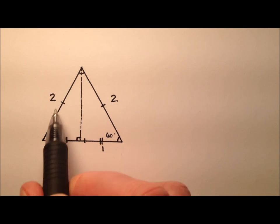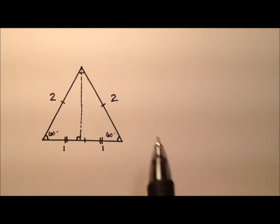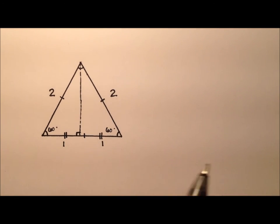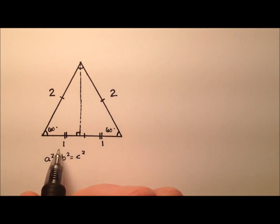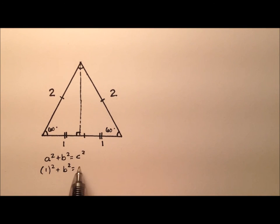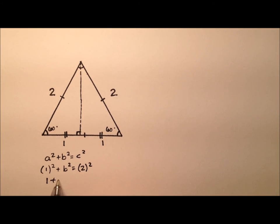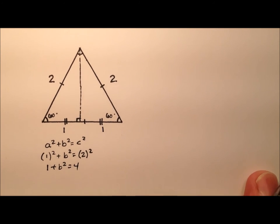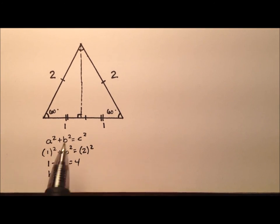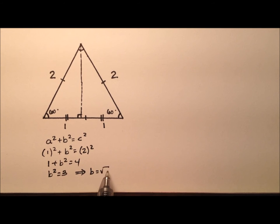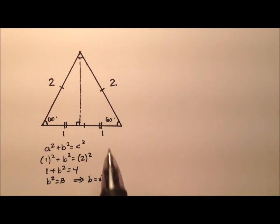Since this is a right triangle, I can use the Pythagorean theorem to find the height. So a squared plus b squared equals c squared — one squared plus b squared equals two squared. That gives us one plus b squared equals four, so b squared equals three, and the height b equals the square root of three.